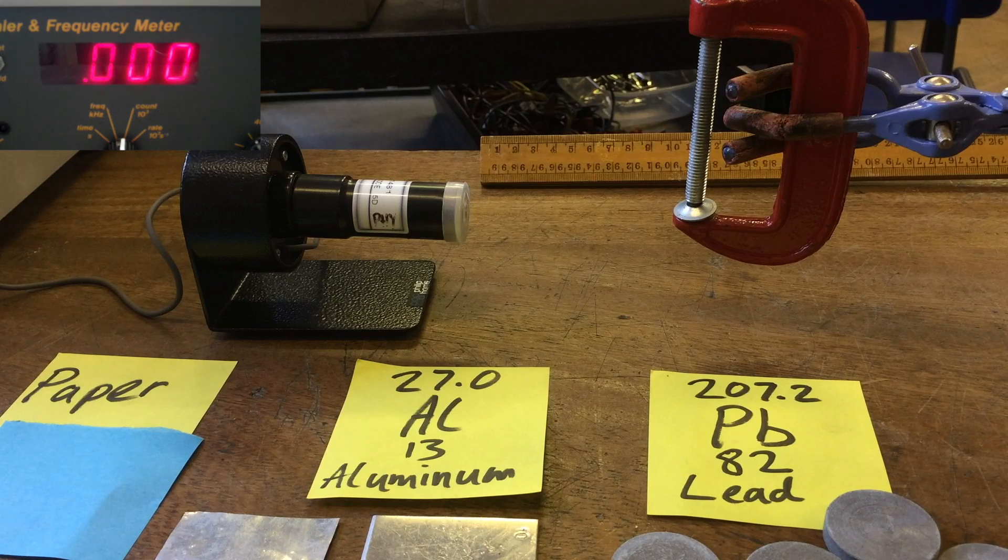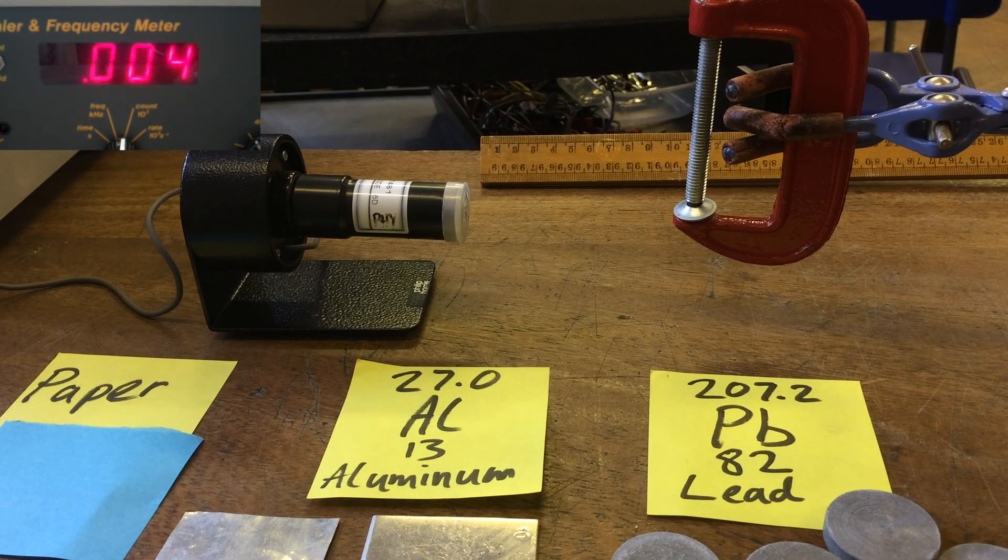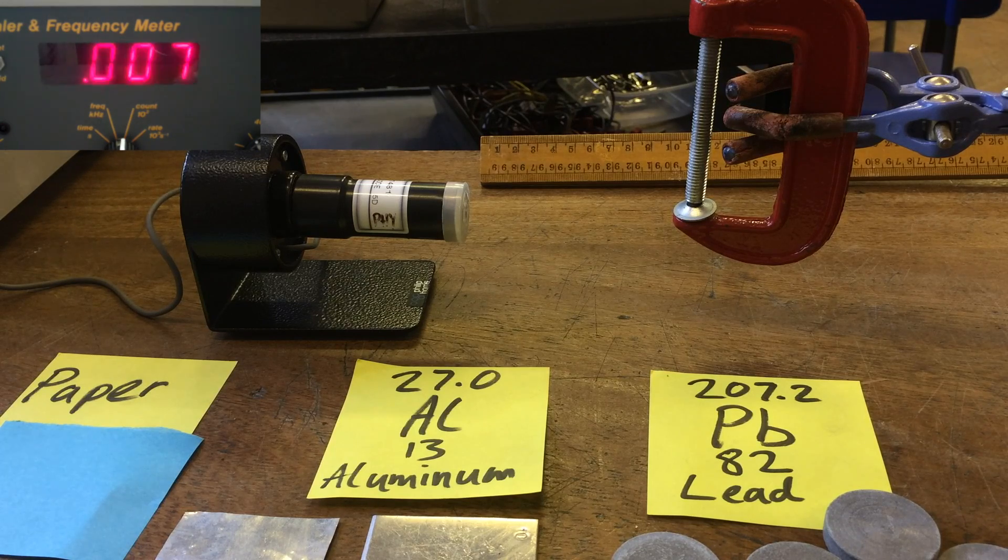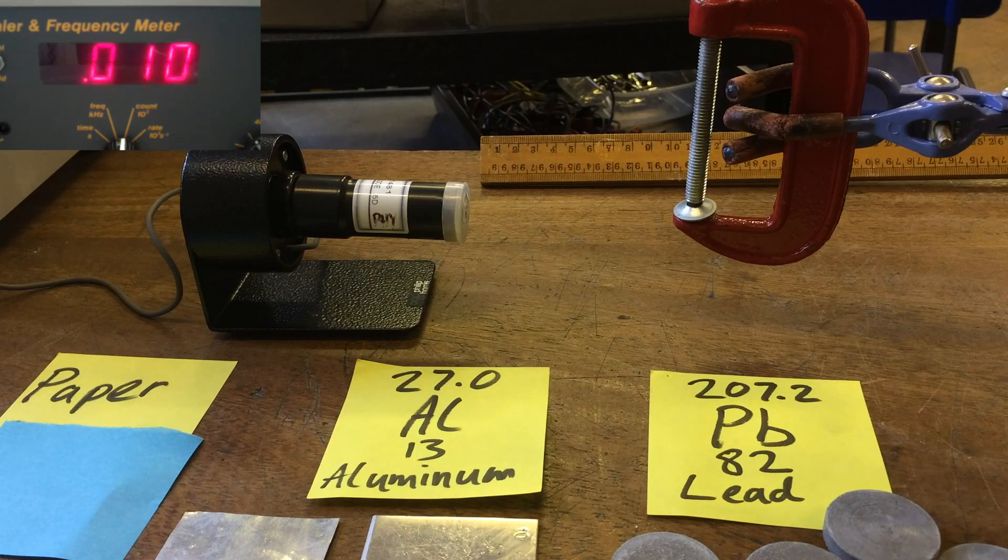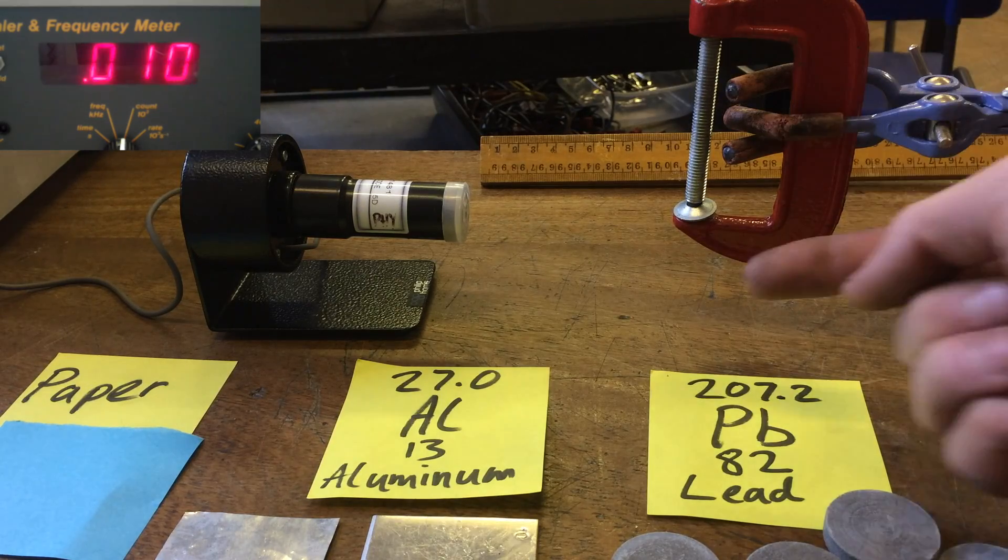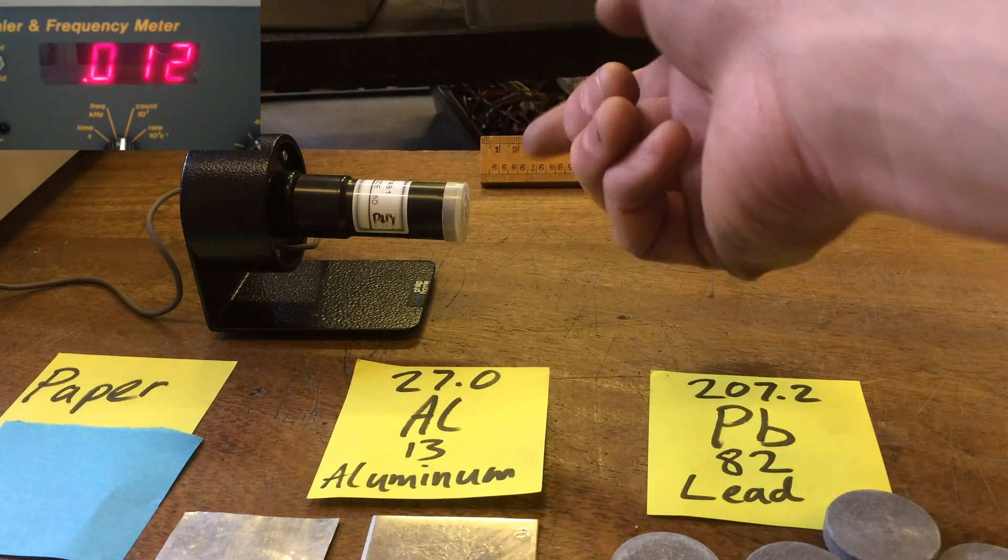Hi there, in this video I'm going to be going through the three kinds of ionizing radiation and looking at their ionization ability and their penetration. To do this, we're going to use a piece of equipment called a Geiger-Muller tube. This is the Geiger-Muller tube here, and the ionizing radiation enters here and is detected.